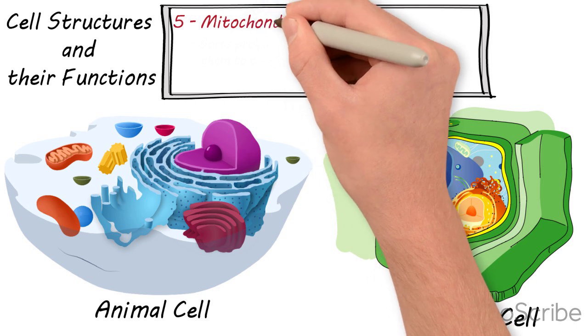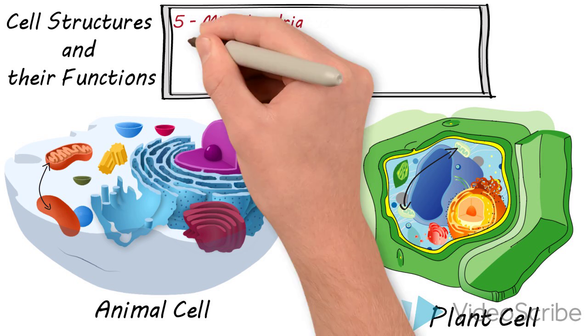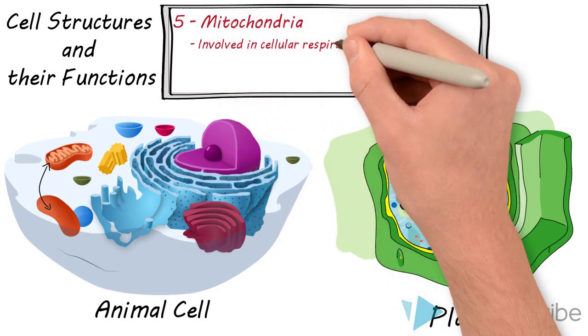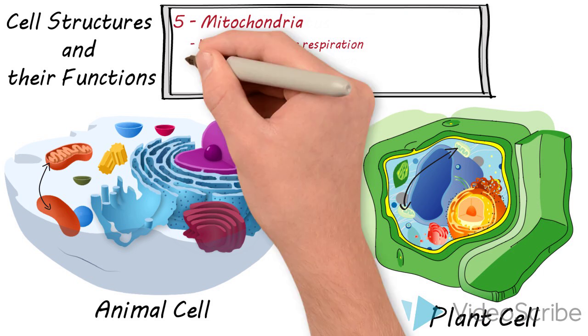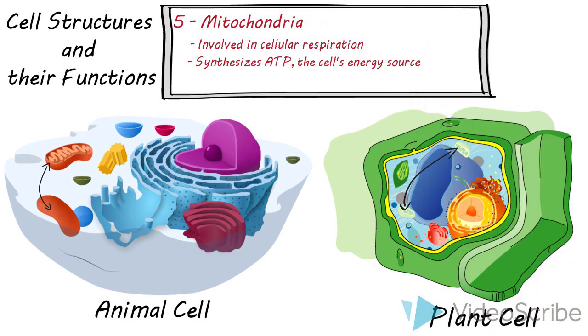Next we have the mitochondria, known as the powerhouse of the cell. It's involved in cellular respiration which is used to make ATP. ATP being the cell's energy source or the energy currency of the cell. So the mitochondria produces the energy for the cell and for your whole body.